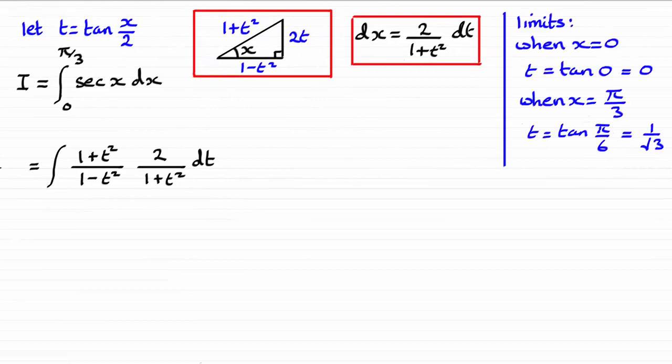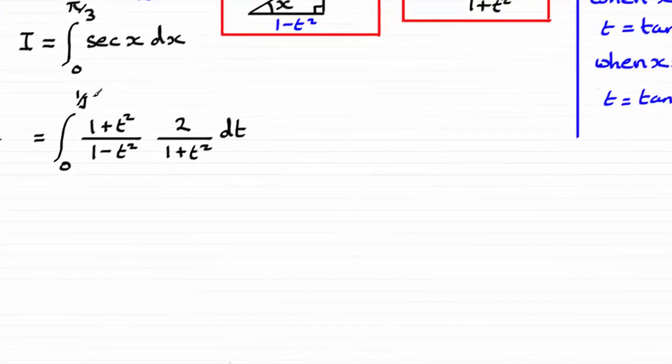Substitute when x is 0 in and when x equals pi upon 3 in. And you'll see that we get t equals 0 when x is 0. So put that in there. And when x is pi upon 3, we get 1 over root 3. So put those values in there.